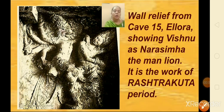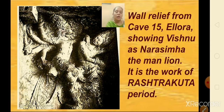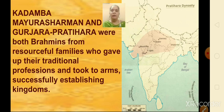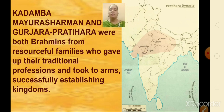Look at this picture — it is a walled relief from Cave 15, Ellora. It shows Vishnu in the Narasimha avatar, that is the man-lion, and it is the work of the Rastrakutta period. In some cases, men from enterprising families used their military skills to carve out kingdoms — for example, Kadamba Mayura Sharman and Gurjara Pratihara Harishchandra, who were Brahmanas.